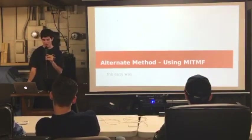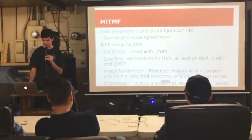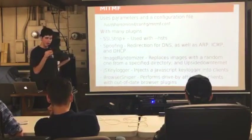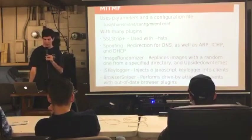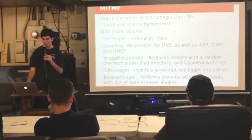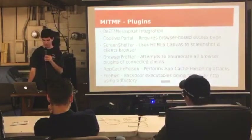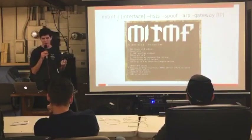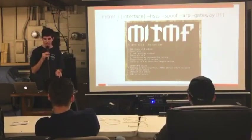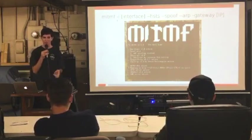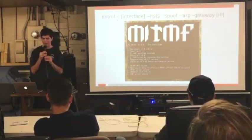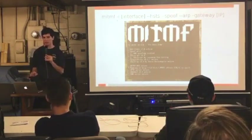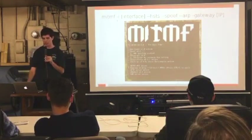We can also automate some of this process using Man in the Middle Framework. MITMF has lots of plugins to do other functions, but for the most part it's configured within a configuration file. Using just a few parameters on the command line, we can run almost the same process as before: specifying the interface, specifying the HSTS flag to downgrade SSL connections, using the spoof and ARP flags to spoof the ARP gateway, and then specifying the target IP. However, it would also need to be logged within Wireshark or another program.